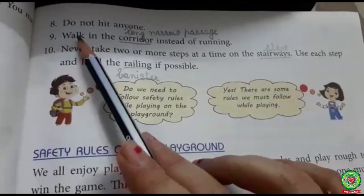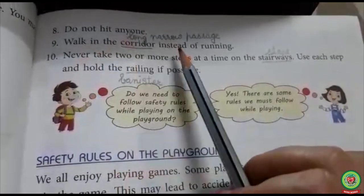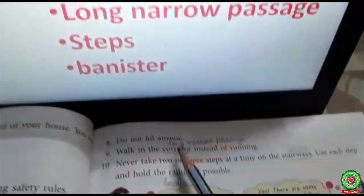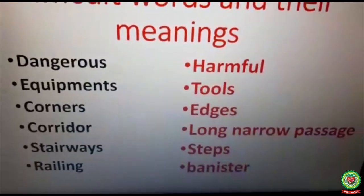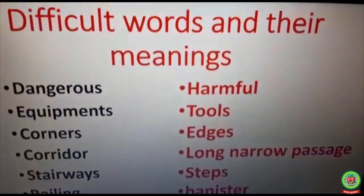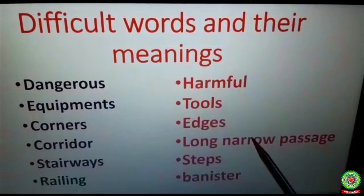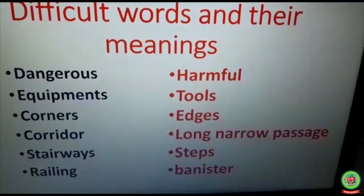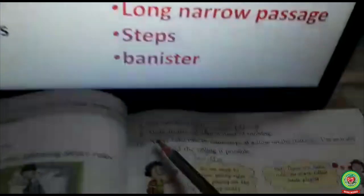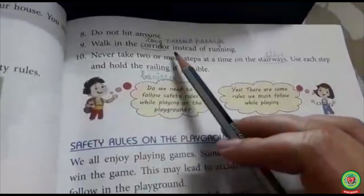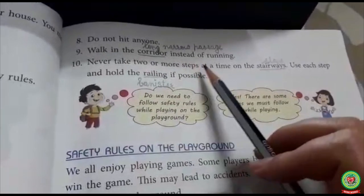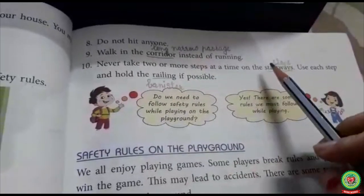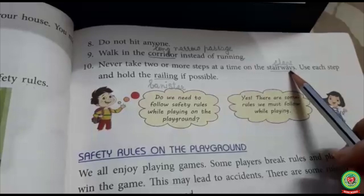Number nine: walk in the corridor instead of running. Underline the word 'corridor' and write the meaning: long narrow passage. Number ten: never take two or more steps at a time on the stairways. Underline the word 'stairways' and write down: steps.